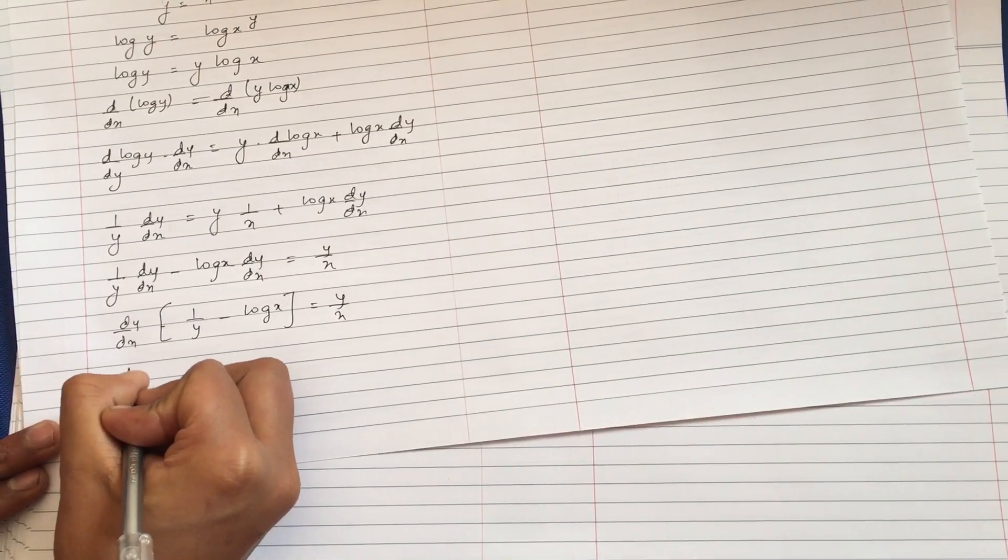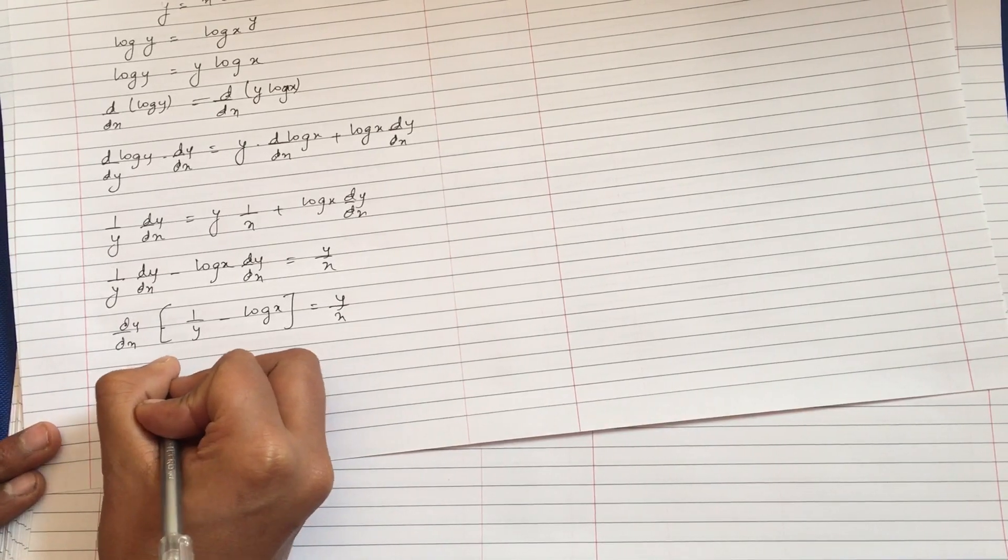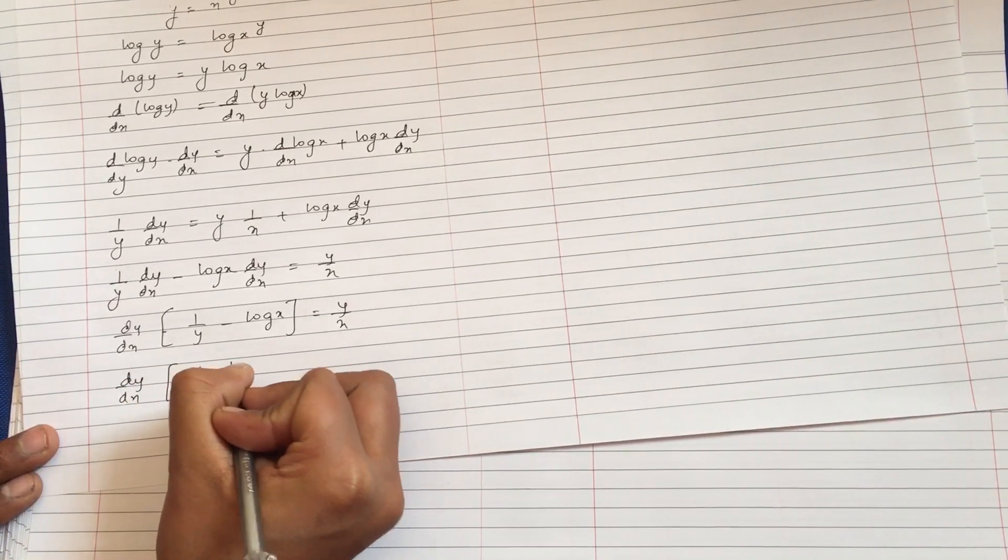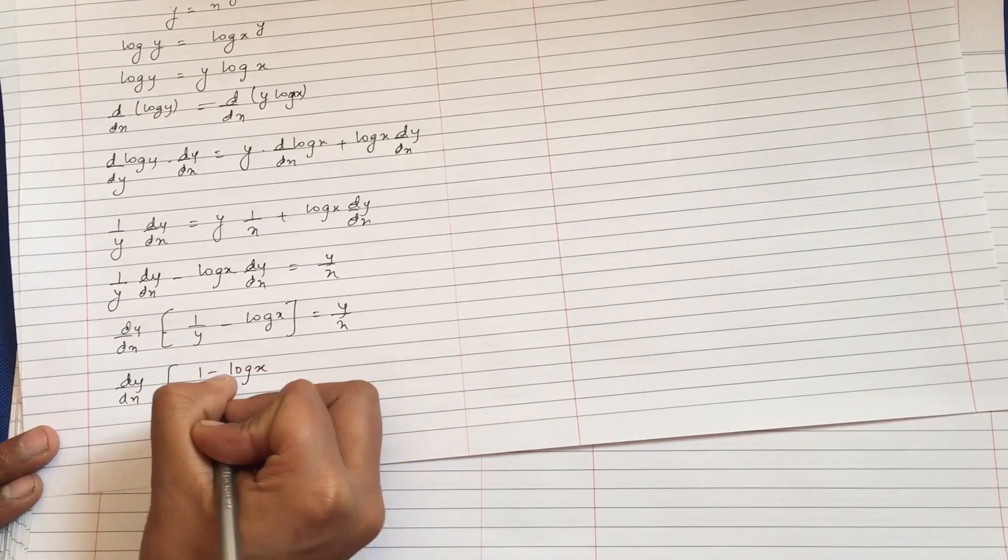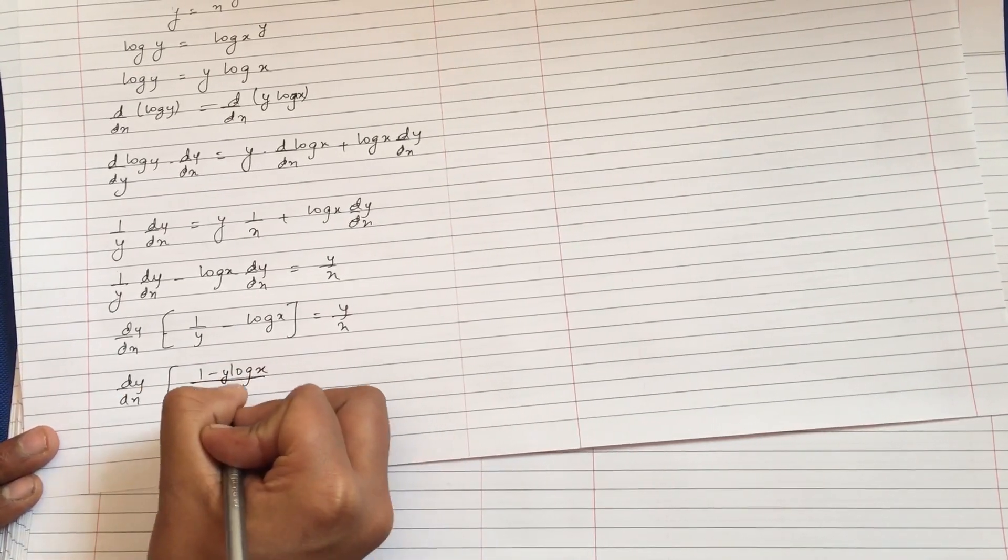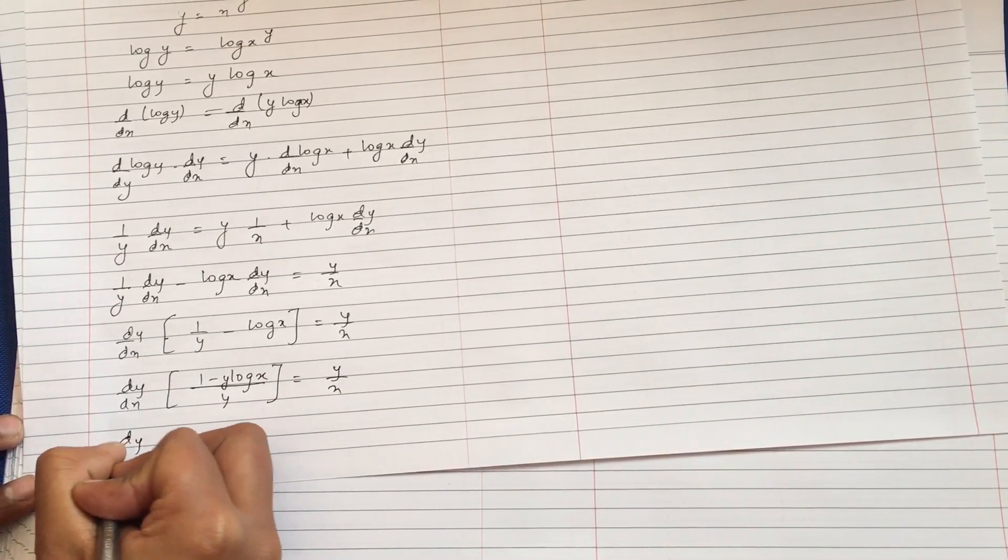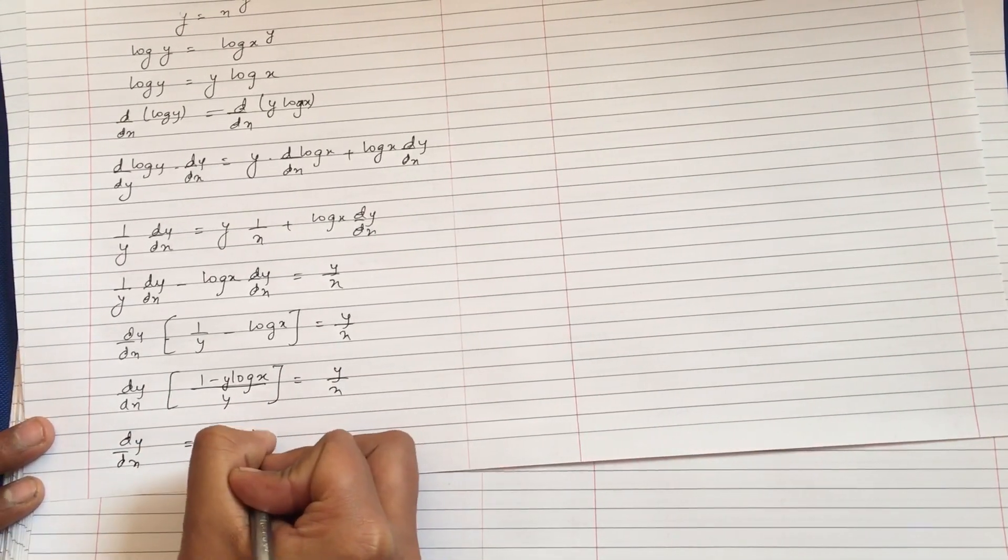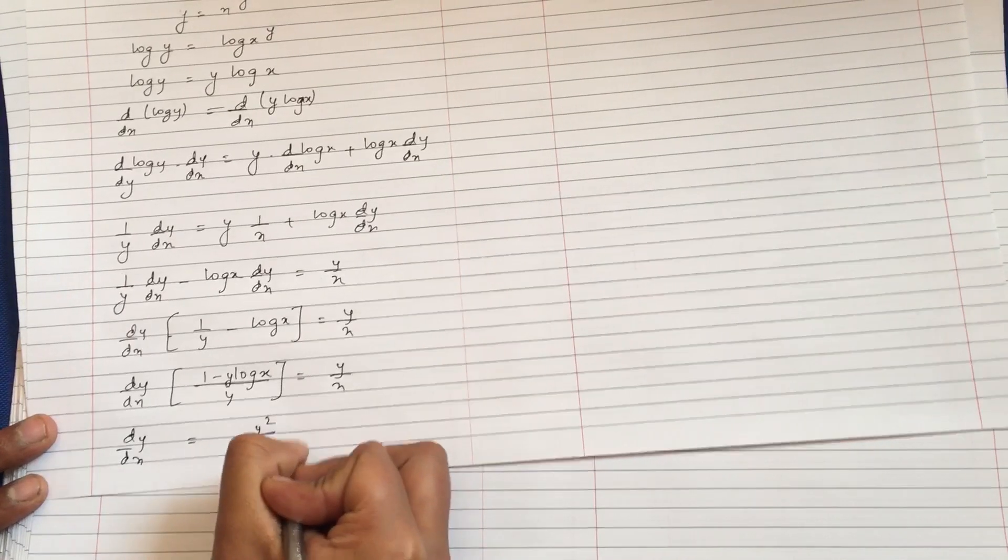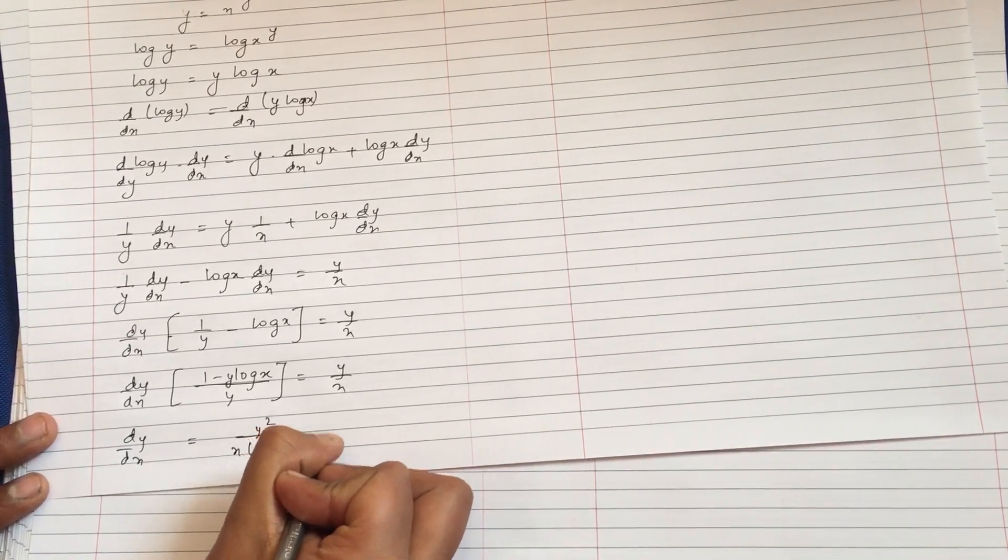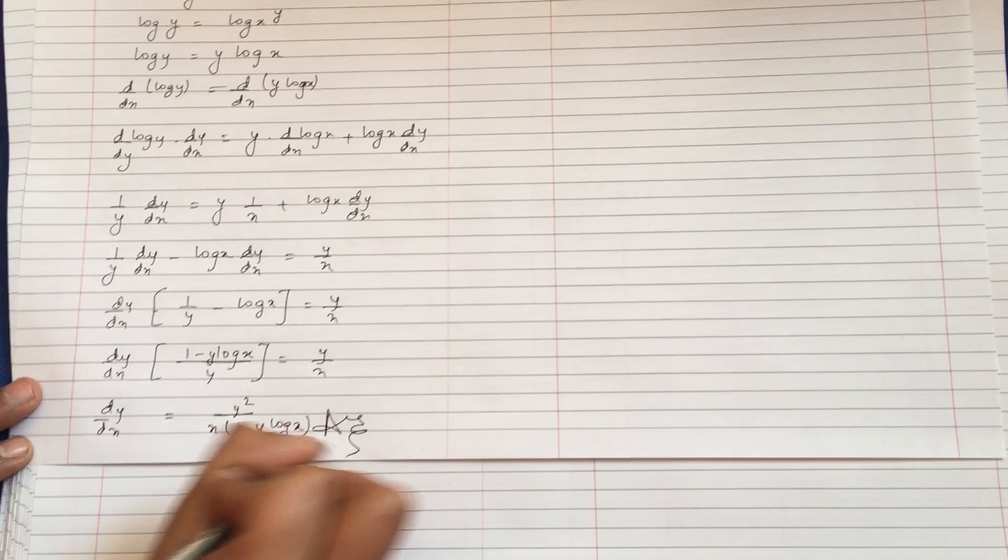So, this will be giving you 1 by y minus log x times dy/dx equals y by x. So finally, dy by dx equals y squared upon x times (1 minus y log of x). And this is your answer.